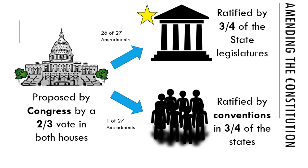The second method: proposed by Congress by a two-thirds vote in both houses, then ratified by conventions in three-quarters of the states. Only one amendment has been done this way — the repeal of prohibition. The reason was they thought conventions would have a better pulse on what citizens actually wanted, so they sent it to conventions rather than state legislatures. How conventions are selected varies a bit from state to state, but generally they consist of citizens selected to represent their area.